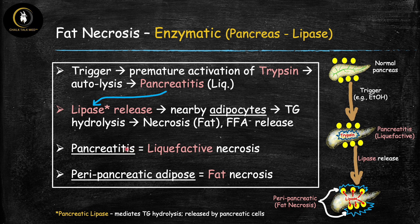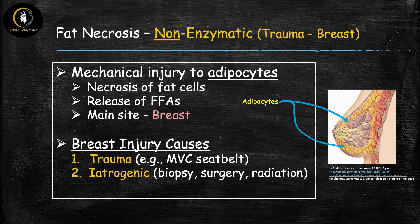This causes fat necrosis around the pancreas, known as peripancreatic fat necrosis — 'peri' meaning near. So in pancreatitis you actually have two types of necrosis: liquefactive necrosis of the pancreas itself, and fat necrosis of the surrounding adipose tissue. This fat necrosis is enzymatic because the enzyme — lipase — is what damages the nearby fat cells.